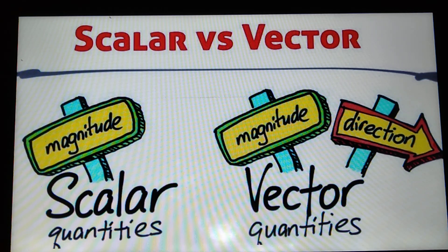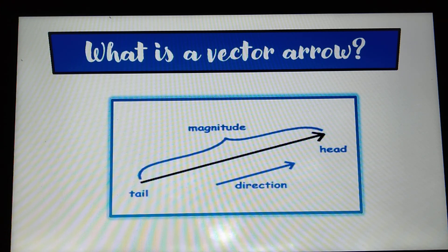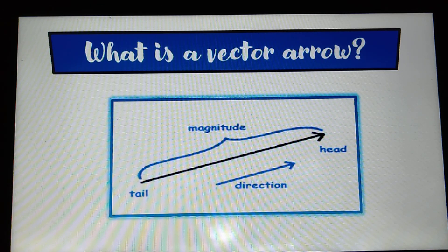Scalar quantities are quantities with magnitude, and vector quantities are quantities with magnitude and direction. Vector quantities are often represented by scaled vector diagrams. Vector diagrams depict a vector by use of an arrow drawn to scale in a specific direction. The arrow has three parts: the tail, the body or the length, and the head. The tail of the arrow tells the origin, the body tells the magnitude, and the head tells the direction.